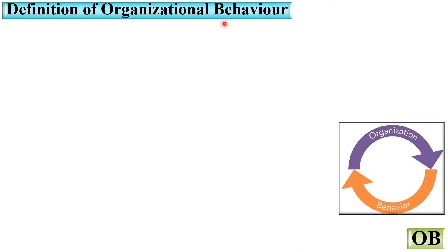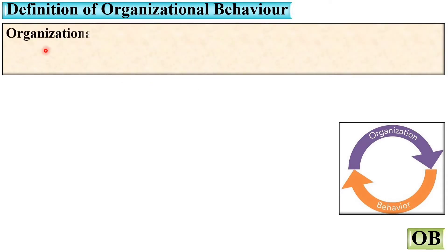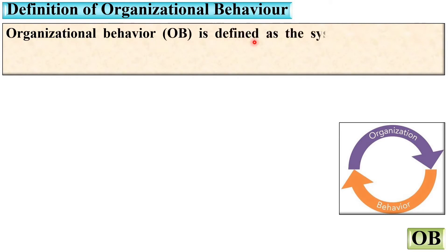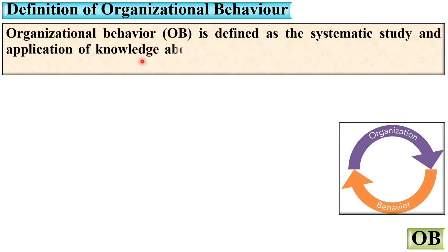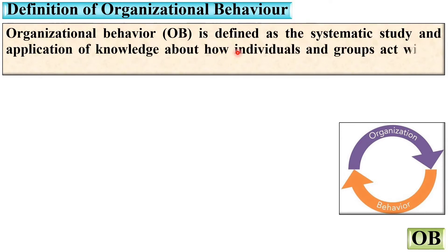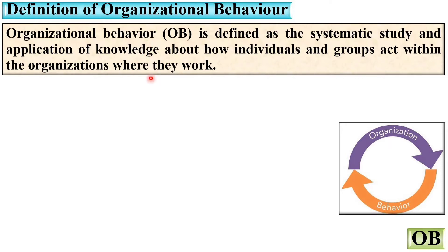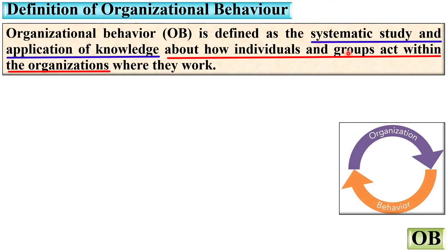First, the definition of organizational behavior. Organizational behavior is defined as the systematic study and application of knowledge about how individuals and groups act within the organizations where they work. Basically there are three different parts: first, OB is the systematic study and application of knowledge; second, about how individuals and groups act within the organization; and third, where they work. It is easy to remember the definition by considering these three parts.